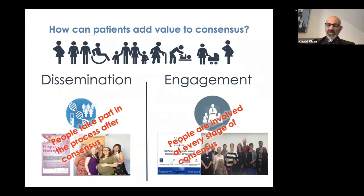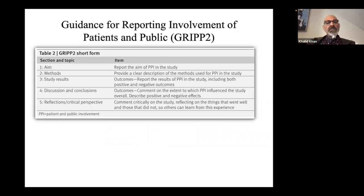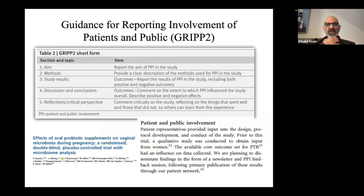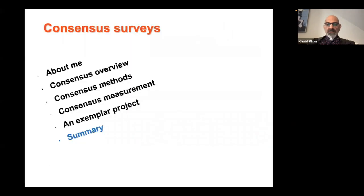In the consensus project, I highlight patient and public involvement as an important feature because going forward, description of patient and public involvement in publications is going to become standard — in the same way as reporting of statistical methods in the methods section has become standard in scientific literature. For example, in this randomized control trial, patient and public involvement has been described in the methods section using a guideline called GRIP2. For our project, we should also consider how we would formally involve patients and the public in the creation of the guideline.